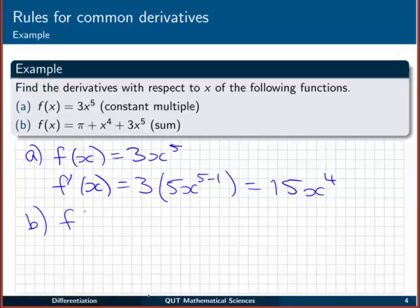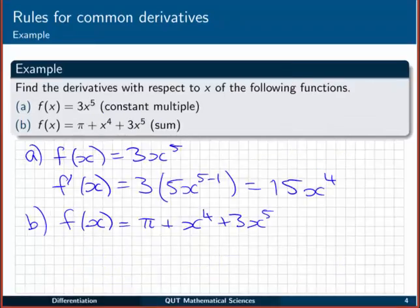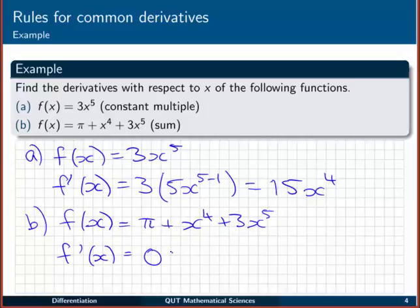Alright, in b we're putting everything together. So f of x is π plus x to the 4 plus 3x to the 5, a sum of π, x to the 4, and 3x to the 5. Back in our table, it says if we have a derivative of a sum, the derivative is just going to be the sum of the individual derivatives. So we differentiate each individual piece and then add them back together. In this case, we want the derivative of π, which we found before to be 0, the derivative of x to the 4, which is 4x to the 3, and the derivative of 3x to the 5, which is 15x to the 4. We can just neaten that up—get rid of that 0, and everything's just fine.